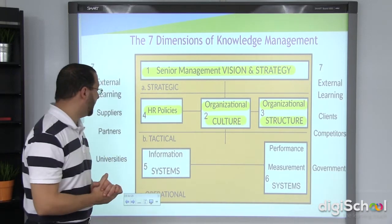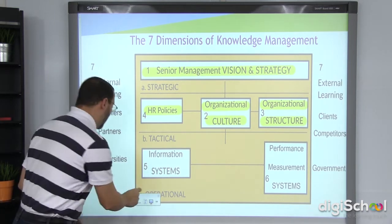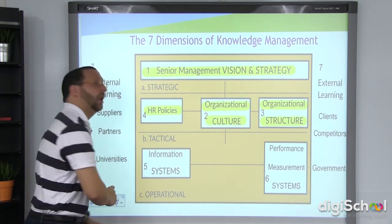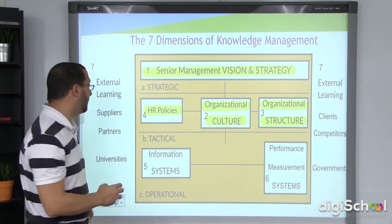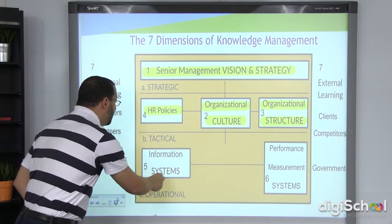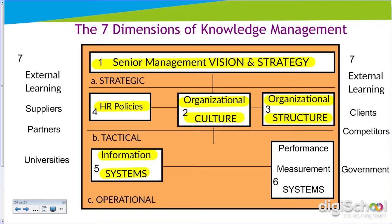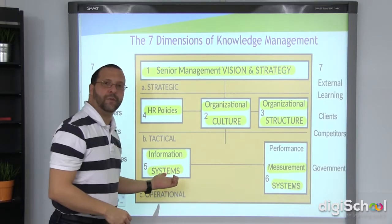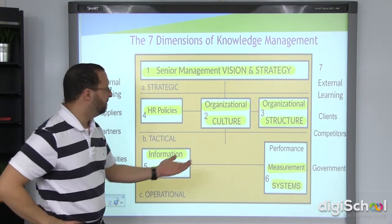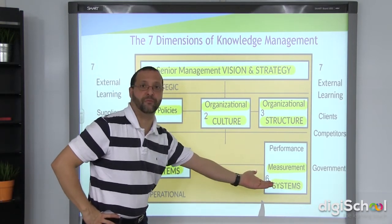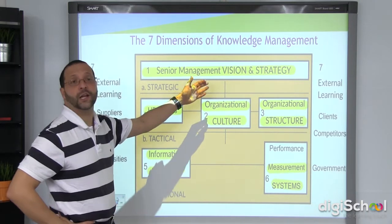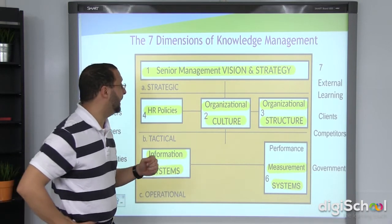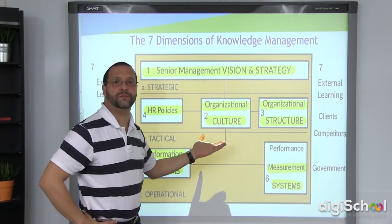This leads us to the operational side of the knowledge management variables. We're dealing with information systems and measurement systems that will support the tactical and strategic dimensions. Without information systems for decision making and without clear metrics for performance, the strategy cannot be conducted appropriately and results will not be achieved.